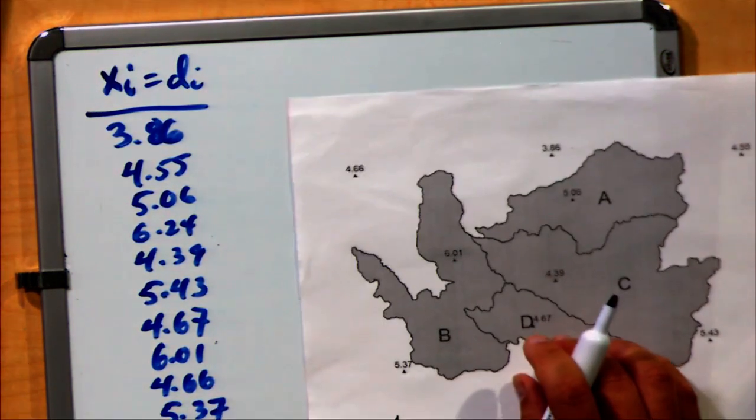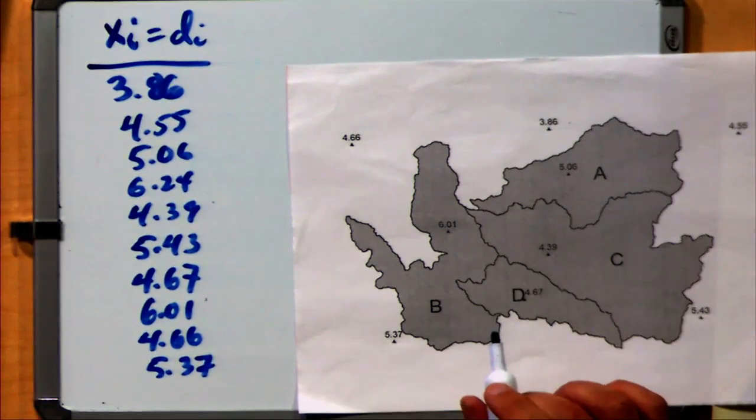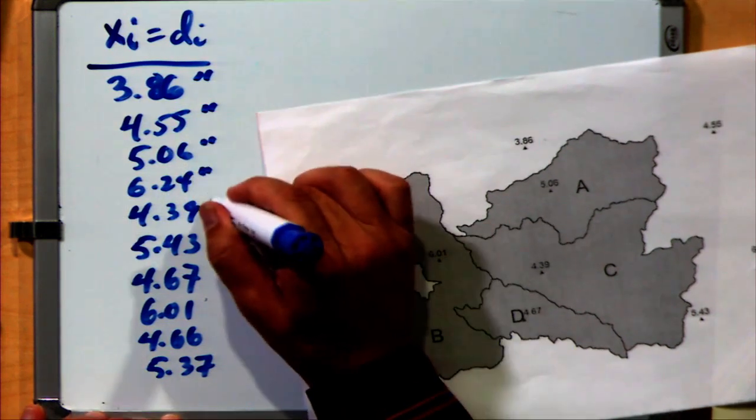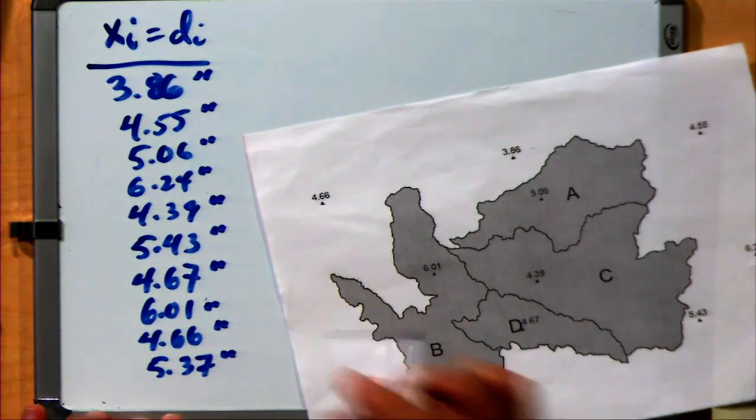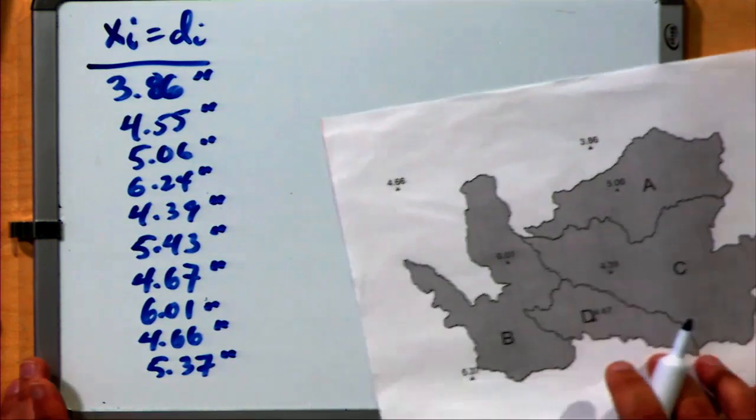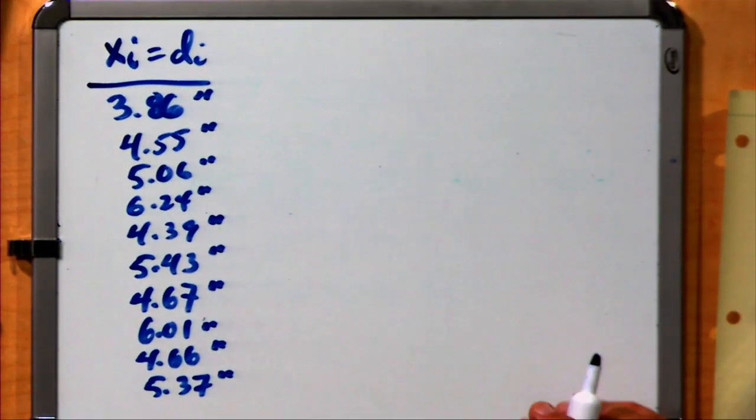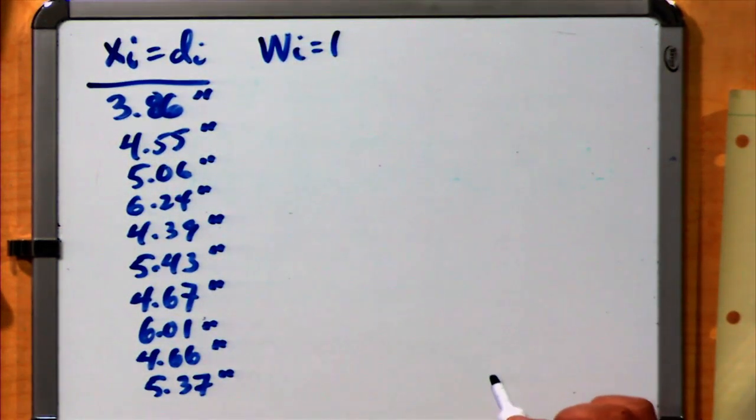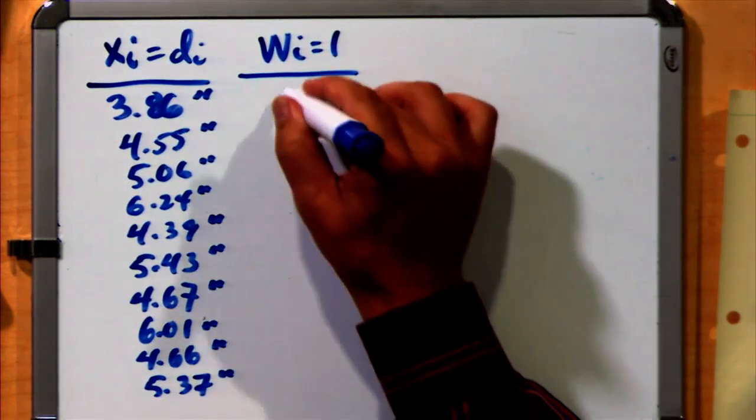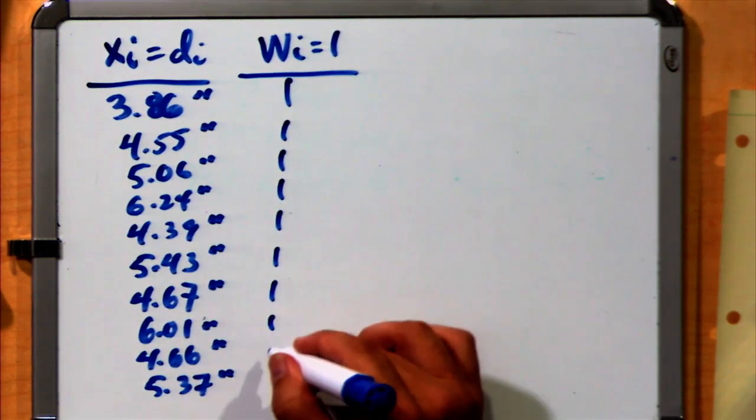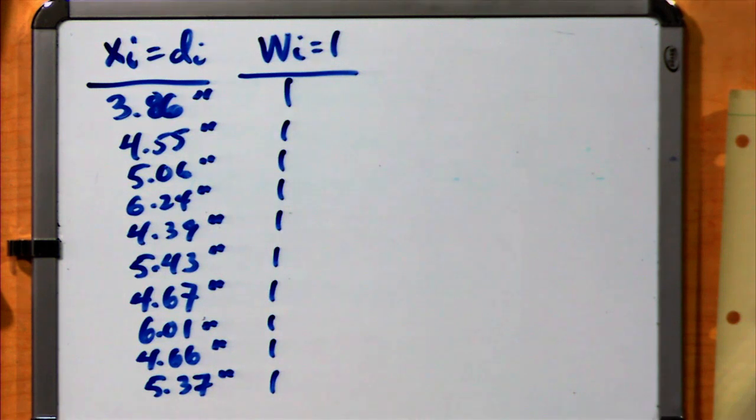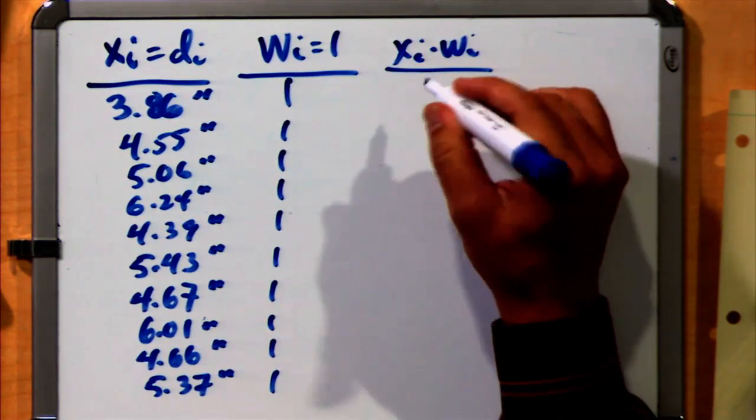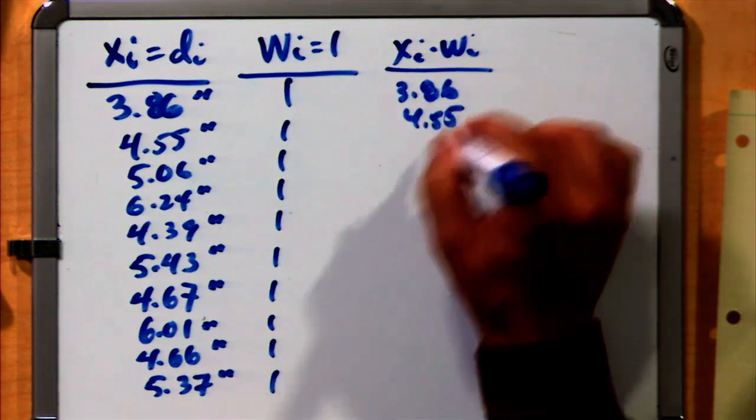These are all the values taken from the map, each located at different points. It's important to recognize the units. Let's assume these are all measured in inches of rainfall. In the case of the arithmetical mean, our weights wi are simply valued at one. Each of these weights has an equal amount of weight. If we multiply those, you simply get the same values: 3.86, 4.55, et cetera.